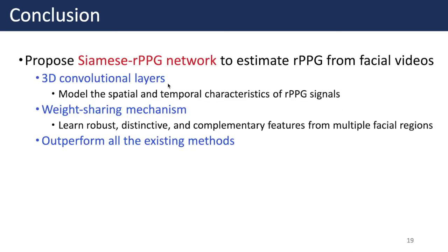We propose a novel Siamese RPPG network to estimate RPPG from facial videos. The contributions are: first, we construct a 3D CNN to model the spatial and temporal characteristics of RPPG signals from two facial regions; second, the weight-sharing mechanism greatly enhances the capability of learning robust features from multiple facial regions; finally, experimental results on three benchmark datasets verify the effectiveness of our proposed methods, significantly outperforming all existing methods. That's all for our presentation. Thank you.